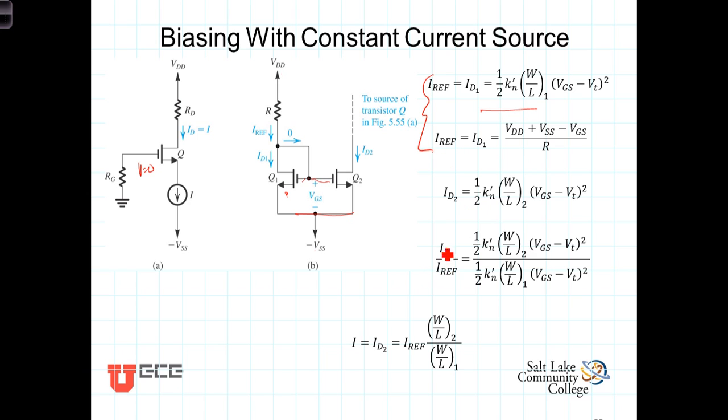So I_D2, the current here, which I should point out, it's this current that then comes in here at the source of the transistor here. This current source is right here, that current.